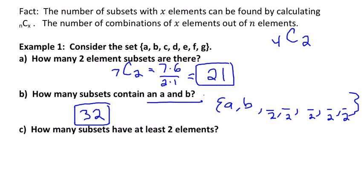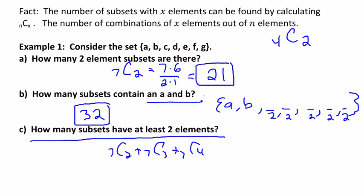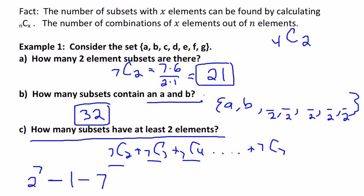If you ask how many subsets have at least two elements, the key is the phrase 'at least two elements.' One way to do it would be to calculate seven choose two + seven choose three + seven choose four, continuing up to seven choose seven. But the easier way is to use our two facts. Fact one says there are 2^7 subsets total. Then we subtract the ones we're not counting: the empty set (1 way) and the one-element sets (7 ways). So 2^7 = 128, subtract 1, subtract 7, gives us 120. There are 120 subsets with at least two elements.